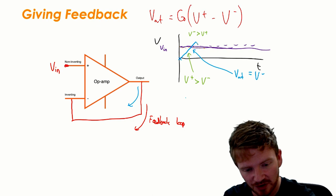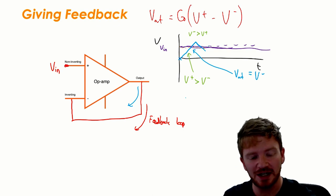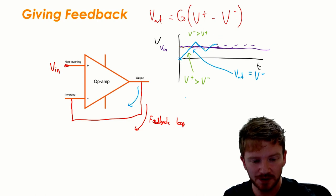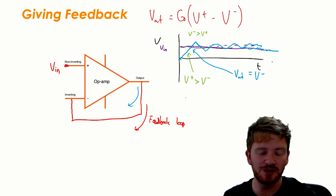But look what's happened now. If it dips below V in then suddenly this whole situation changes again and it wants to go back up. And what we see is it's going to oscillate around at these two values until they become about the same.